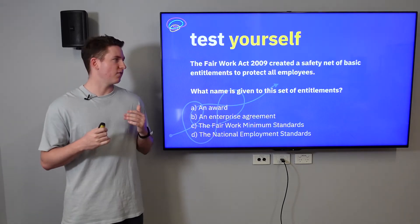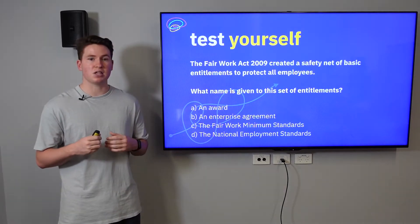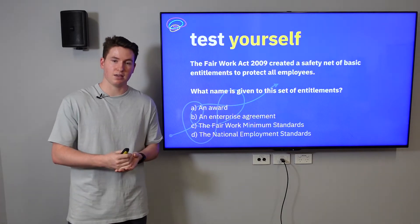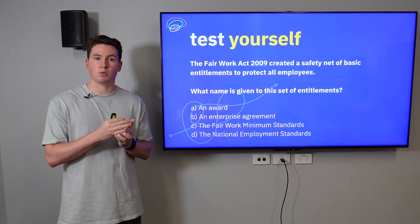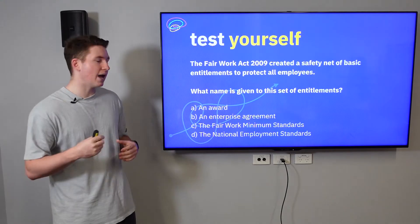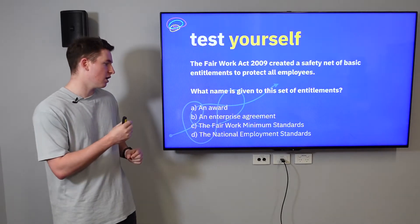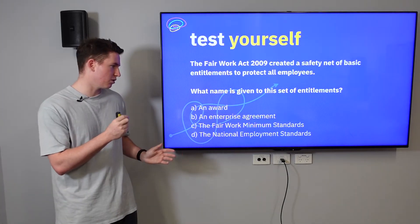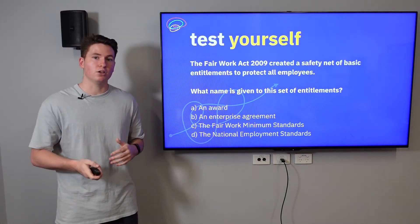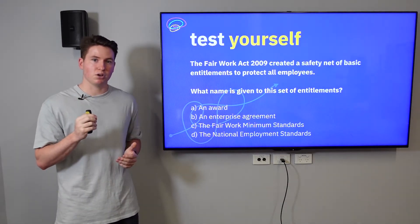The question is: the Fair Work Act 2009 created a safety net of basic entitlements to protect all employees. What name is given to this set of entitlements? It's not an award because that regulates contracts and different industries. It's not an enterprise agreement because that's an agreement between an employer and a group of employees related to only one business. It's not the fair work minimum standards because that's not an actual detail within HRM — that's a key distractor. The answer is D: the National Employment Standards. They put C in there because it's a slight change in wording to catch you out.